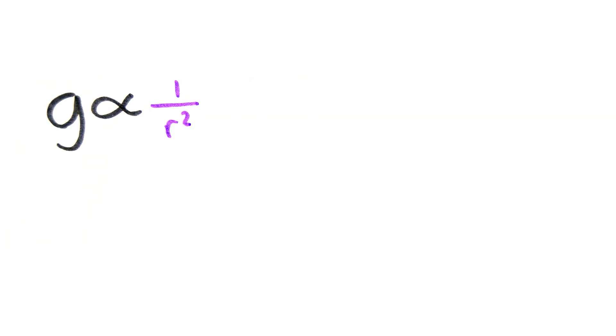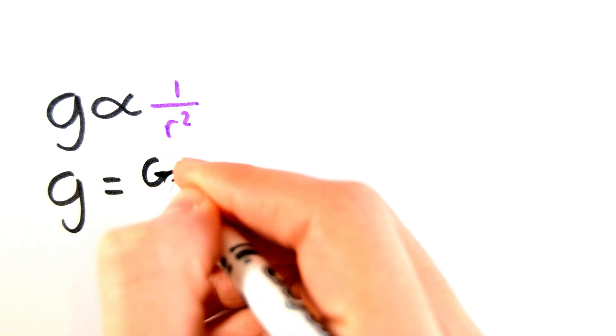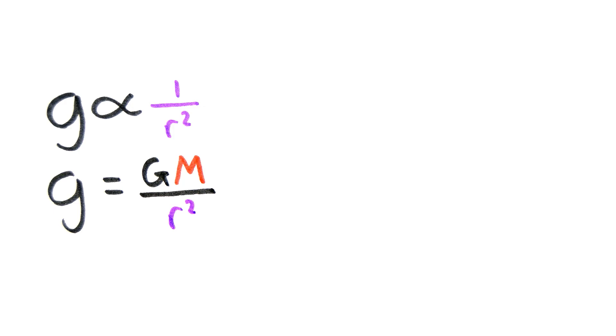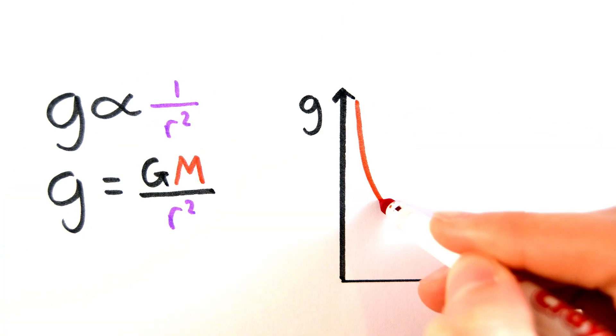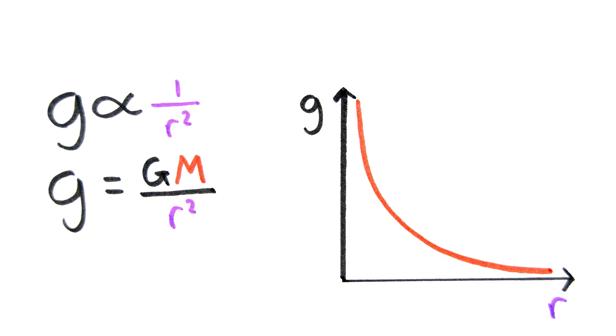For a radial field, the gravitational field strength obeys an inverse square law. The equation for it is g equals GM over r squared. You can see how the gravitational field strength would decrease the further you are from the center of the body producing the field.